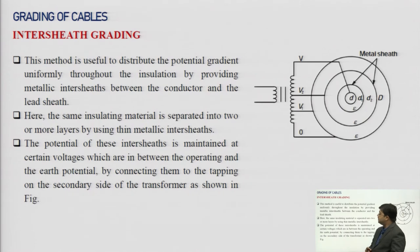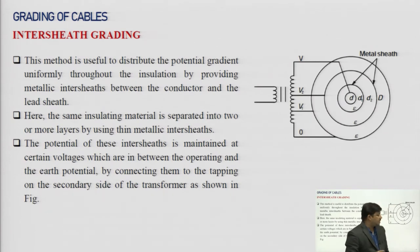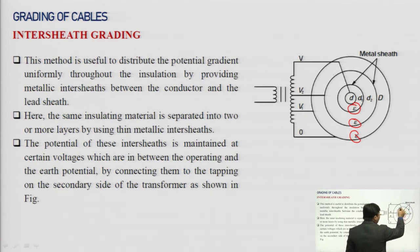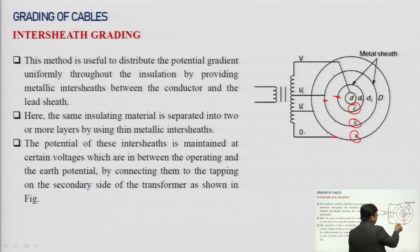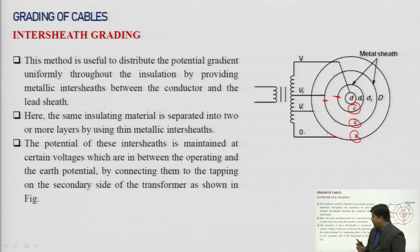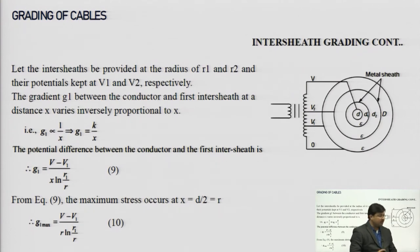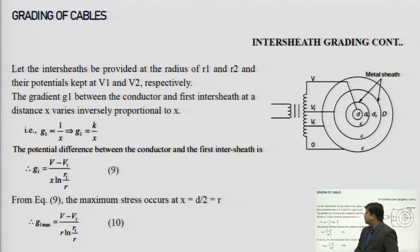Inter-sheath grading is useful for distributing the potential gradient uniformly throughout the cable. Here the dielectric material is common (same permittivity ε), but metallic inner sheaths are provided inside the cable. Two inner metal sheaths are provided, creating voltage levels 0 at the outer sheath, then v₁, v₂, and total voltage V at the conductor. The inner sheaths maintain a uniform voltage gradient. The problem is to find the correct placement (radius) and voltage of each inner sheath.